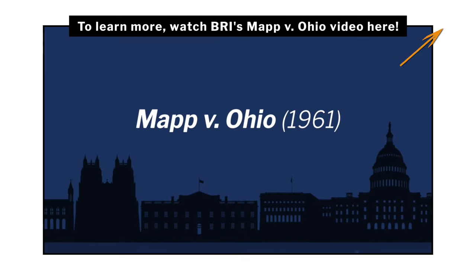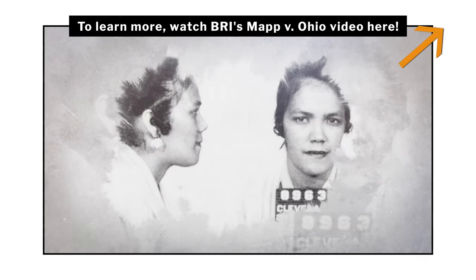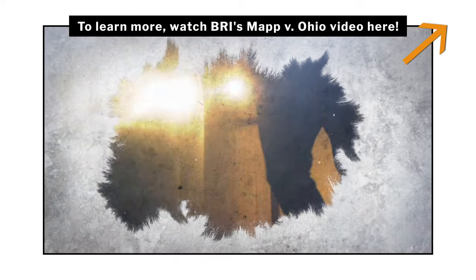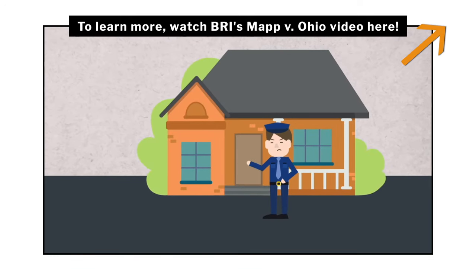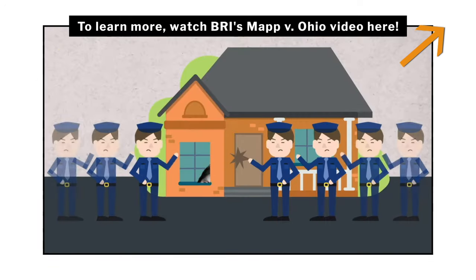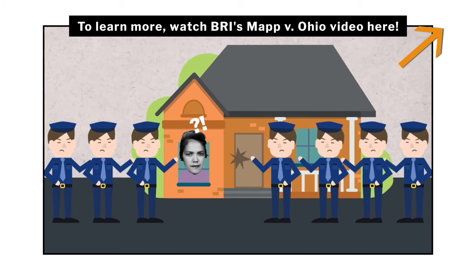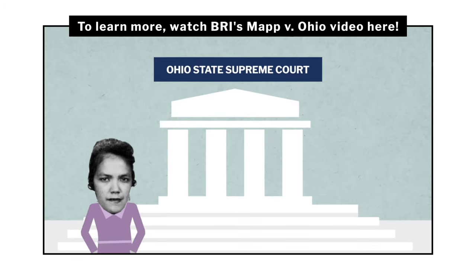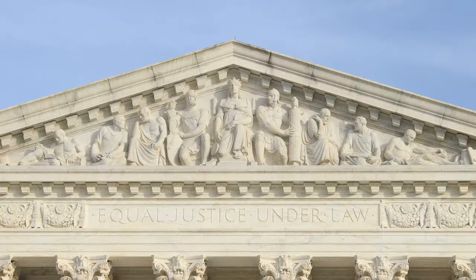In 1961, the Supreme Court heard another landmark case involving the exclusionary rule: Mapp v. Ohio. Police officers in Cleveland broke into Dollree Mapp's home without a search warrant while looking for a suspect involved in a bombing. While searching, they discovered illicit pornographic materials and charged Mapp for possessing them. The Supreme Court's ruling in Mapp's favor incorporated the exclusionary rule to apply to the states.